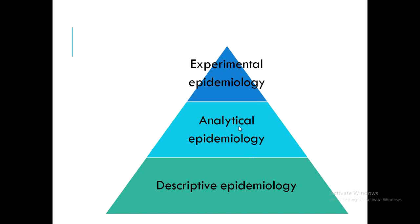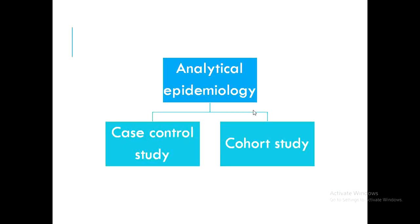In analytical epidemiology the researcher wants to measure the associations between risk factors and the outcome of interest. The superior branch is experimental epidemiology, where the researcher experiments to accept or reject the hypothesis. Today we will discuss the two study designs under analytical epidemiology: case control studies and cohort studies.